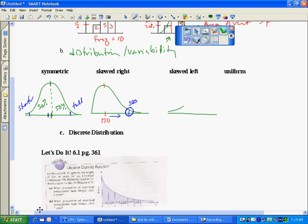If we go the other way, skewed left, the tail is on our left. This might be class sizes. We might have some very small classes, but most of our classes are on this side here where the peak is at.